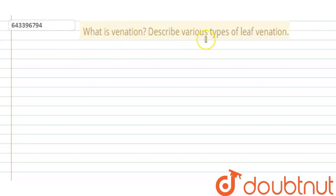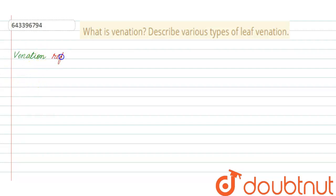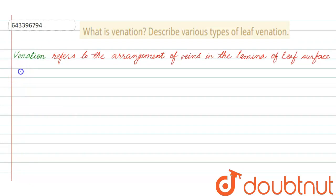Hello everyone. Here the question says: what is venation? Describe various types of leaf venation. So venation basically refers to the arrangement of veins in the lamina of the leaf surface.